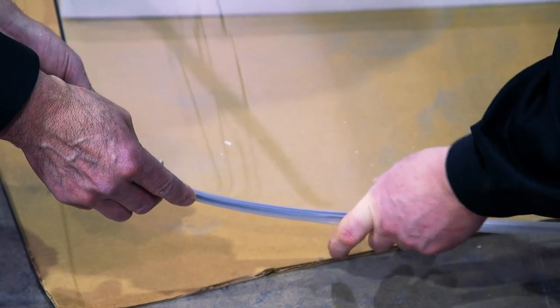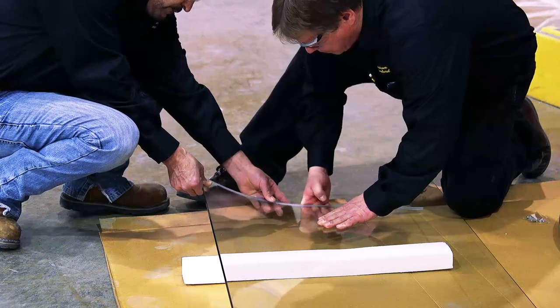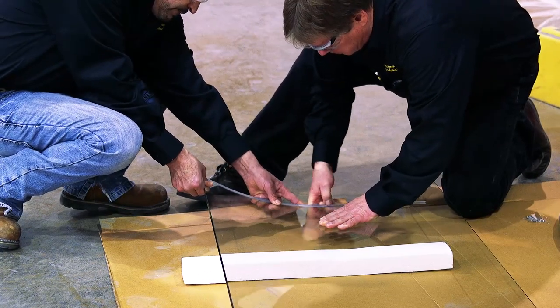Install the gaskets on the top and bottom of the fixed panel, using the glass clips to determine the starting point of the gasket.